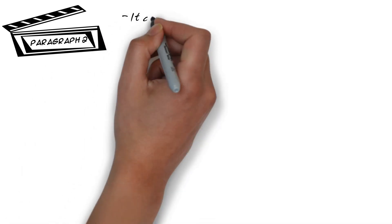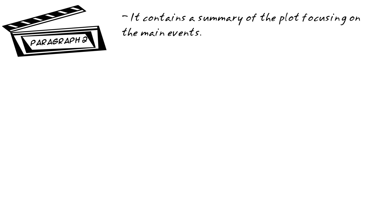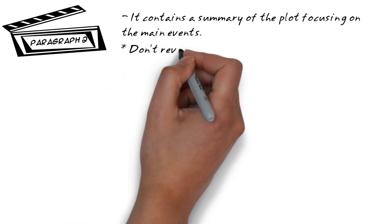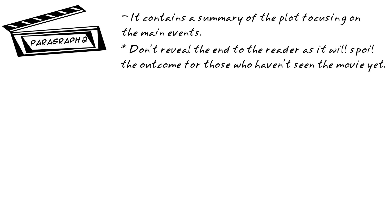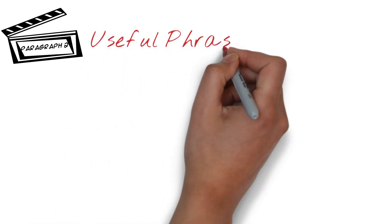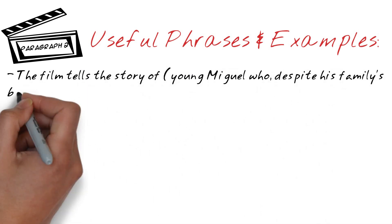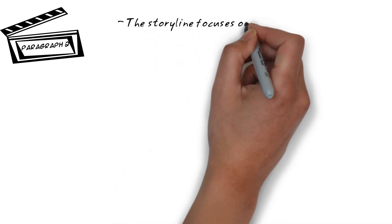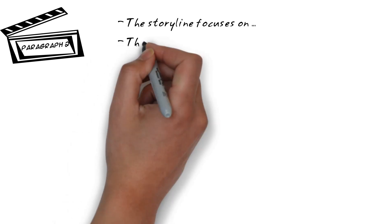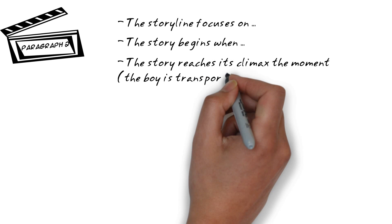Paragraph 2. The second paragraph contains a summary of the plot, focusing on the main events. But don't reveal the end to the reader, as it will spoil the outcome for those who haven't seen the movie yet. The film tells the story of young Miguel who, despite his family's ban on music, dreams of becoming an accomplished musician like his idol Ernesto de la Cruz. The storyline focuses on... The story begins when... The story reaches its climax the moment the boy is transported to the land of the dead.